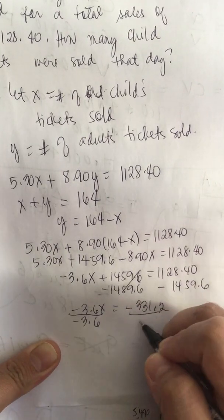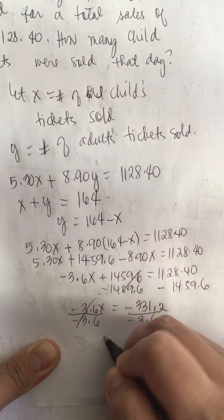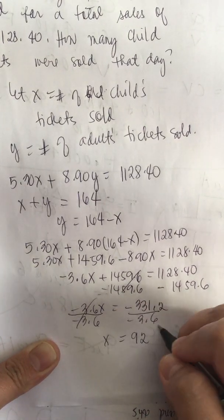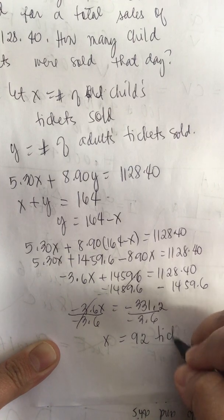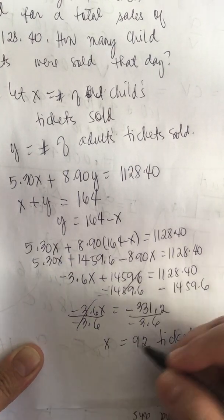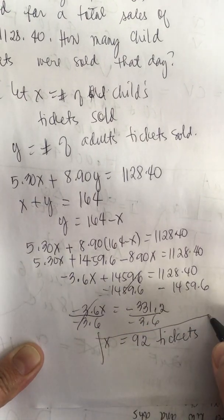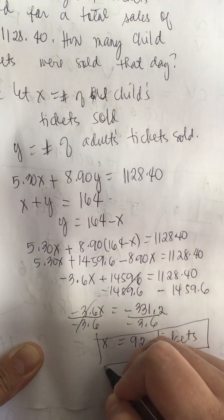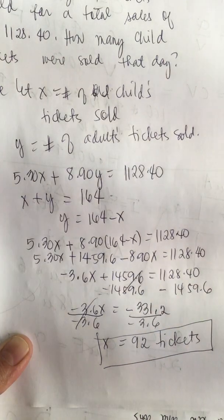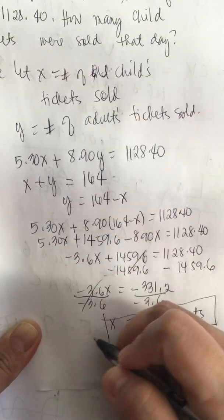So x equals 92 tickets. There were 92 child tickets sold on that day. So this is the answer.